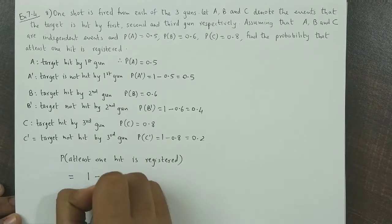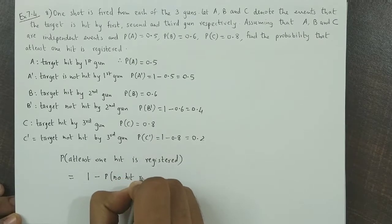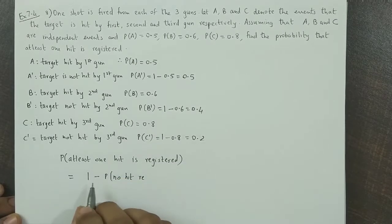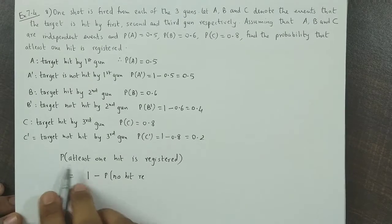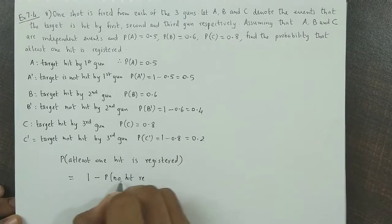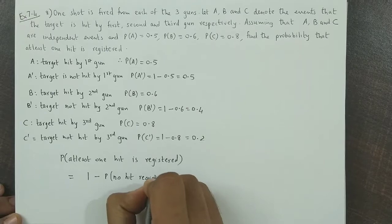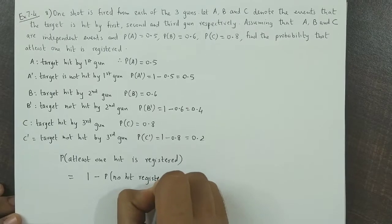We can calculate this as 1 minus probability that no hit is registered. Remember, at least one is 1 minus none. So probability that at least one hit is registered is 1 minus probability that no hit is registered, meaning all three guns miss the target.